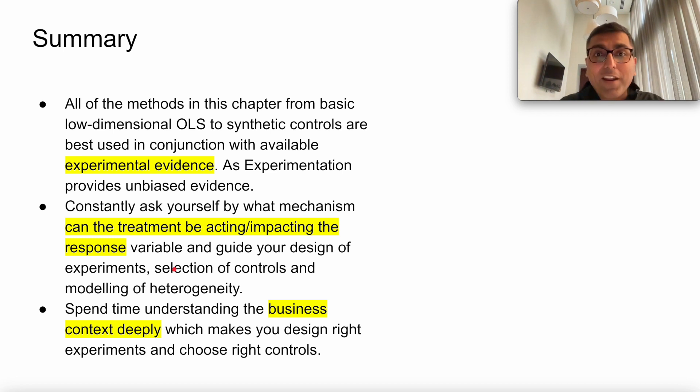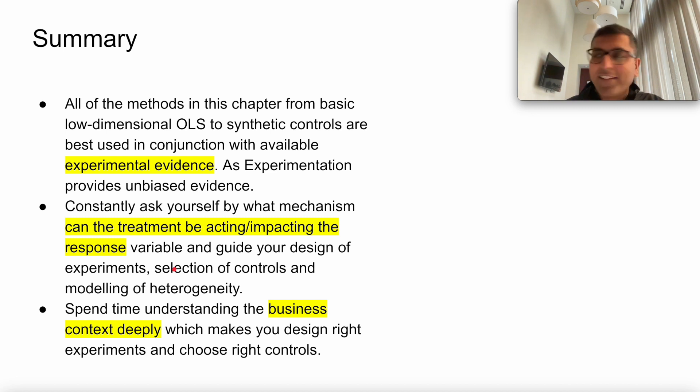So it's super important to use observational study in conjunction with experimental evidence, ideally with an A-B test. And when you can't, do as much as you can to design your experiments and controls so you can factor out various impacts. That's chapter six, Controls. I'll see you all in the next chapter.